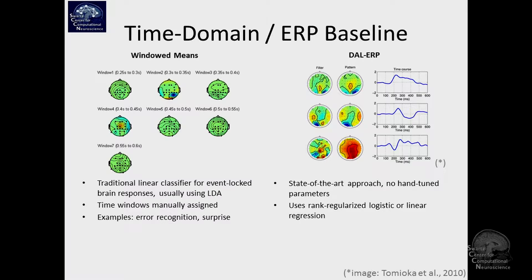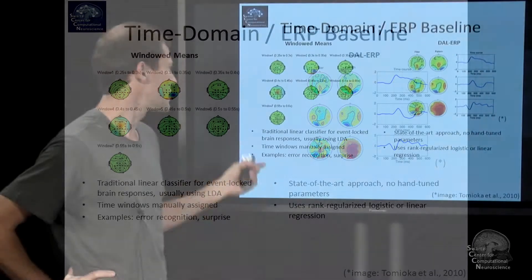There's this big class of processes that we discussed in the last lecture which is event-related potentials and time domain phenomena in EEG and the utilization of those things for BCI purposes. There are two methods that serve as a baseline.